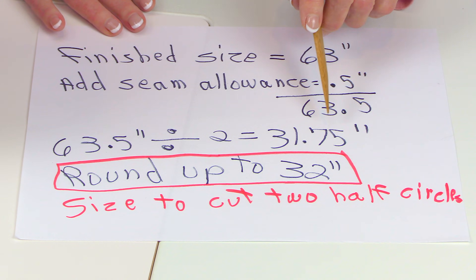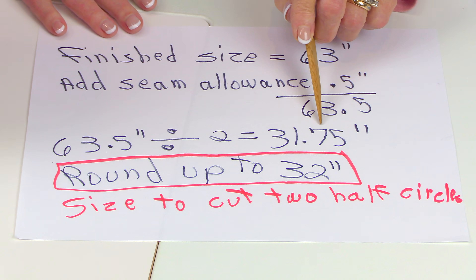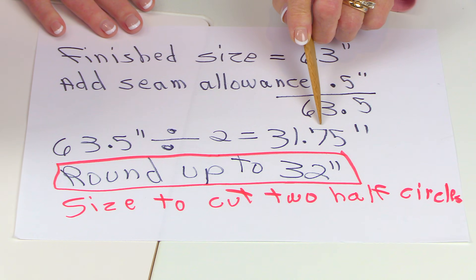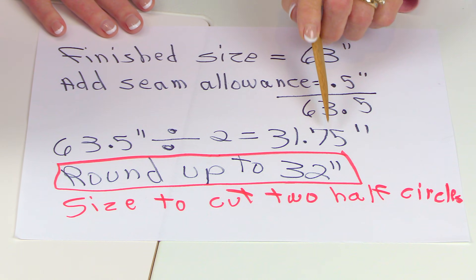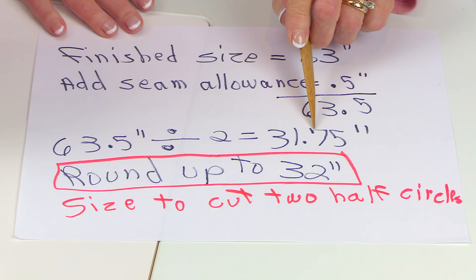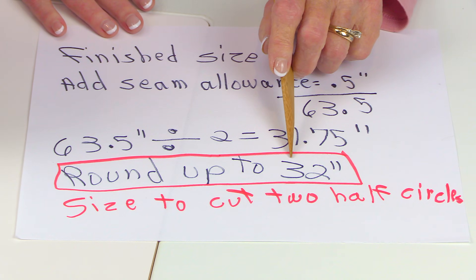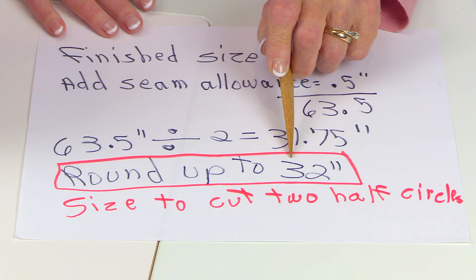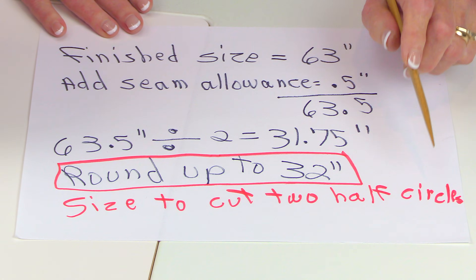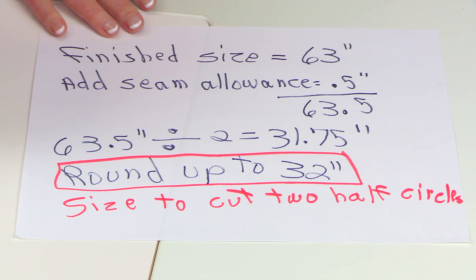So you take the 63 and a half inches and divide it by two. That comes out to 31.75 inches. To make it easier, I'm just going to round up and make it a full 32 inches.